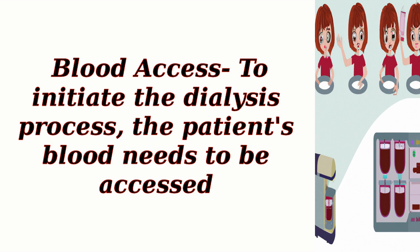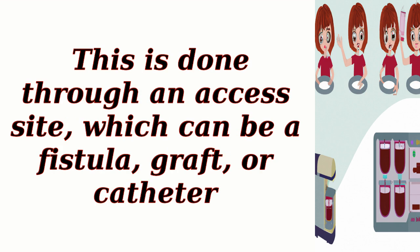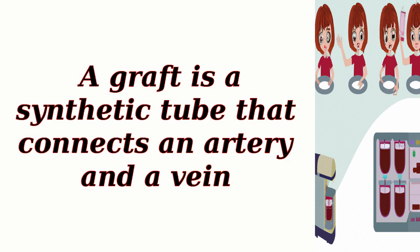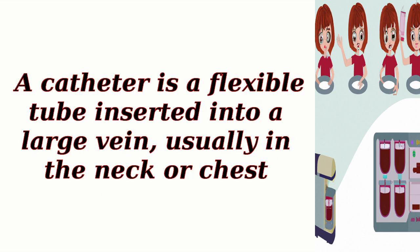Blood access: to initiate the dialysis process, the patient's blood needs to be accessed. This is done through an access site, which can be a fistula, graft, or catheter. A fistula is created surgically by connecting an artery and a vein, allowing for increased blood flow. A graft is a synthetic tube that connects an artery and a vein. A catheter is a flexible tube inserted into a large vein, usually in the neck or chest.